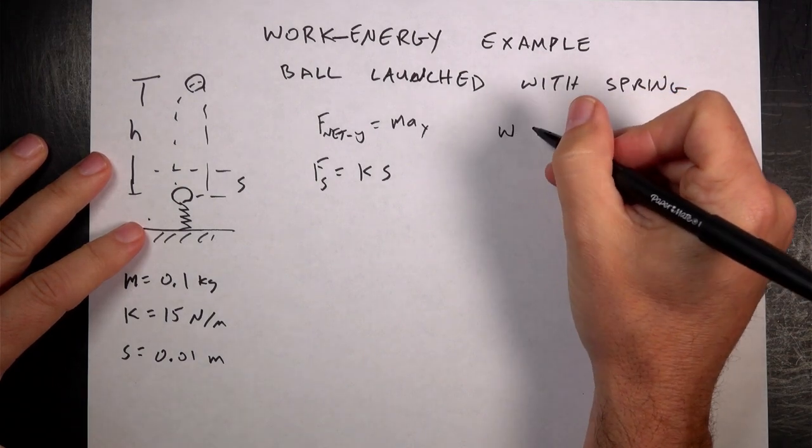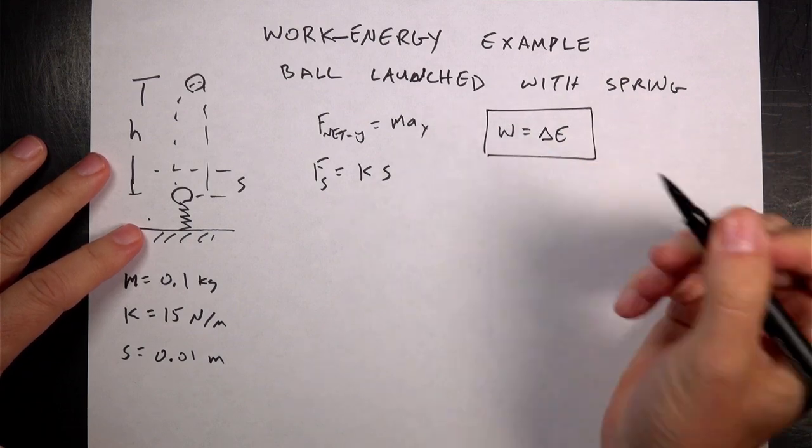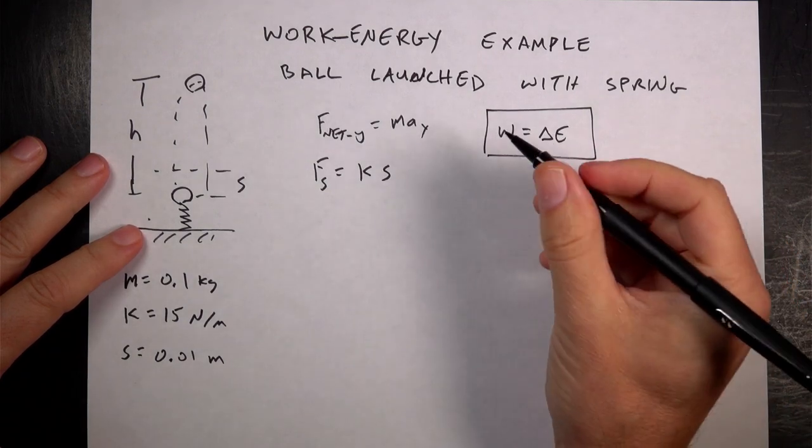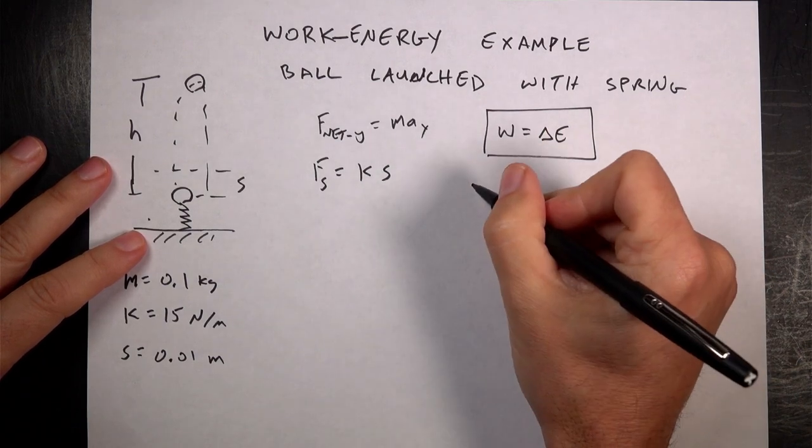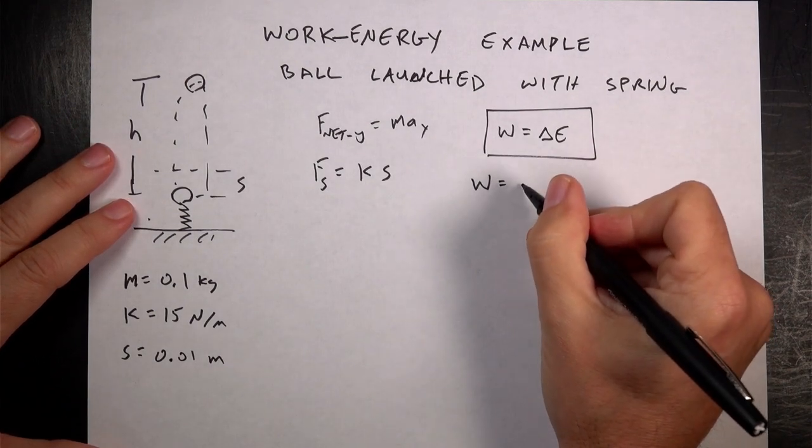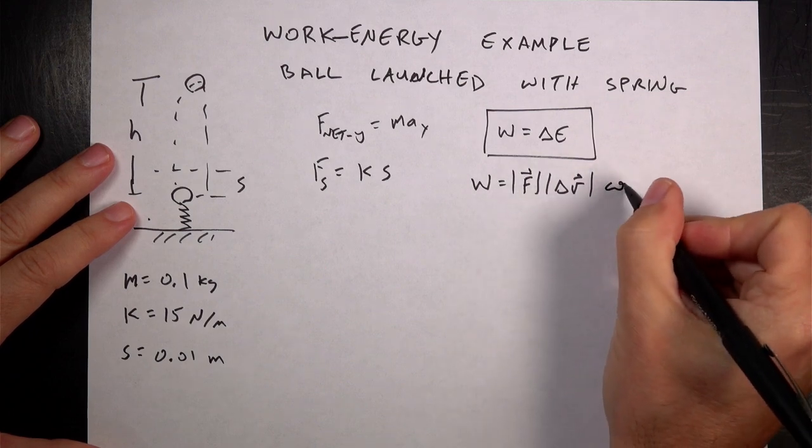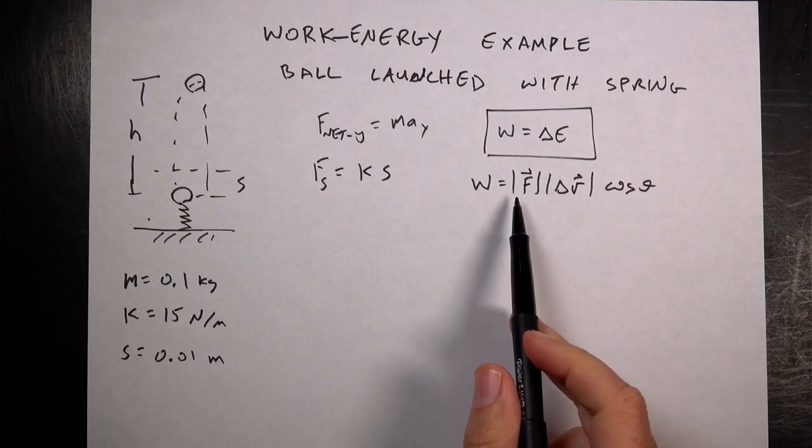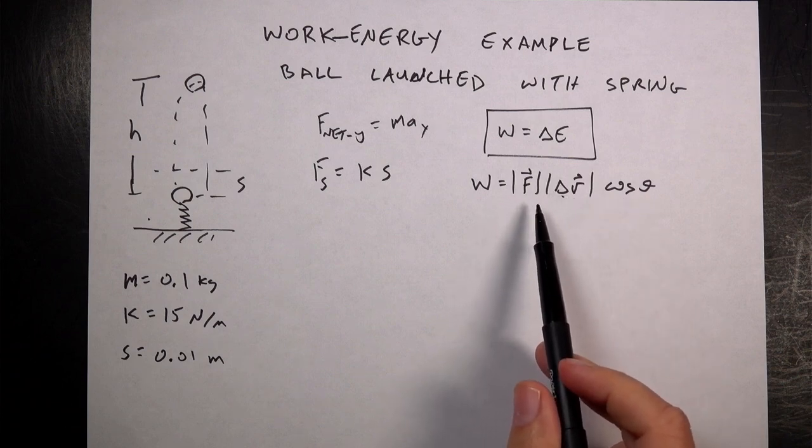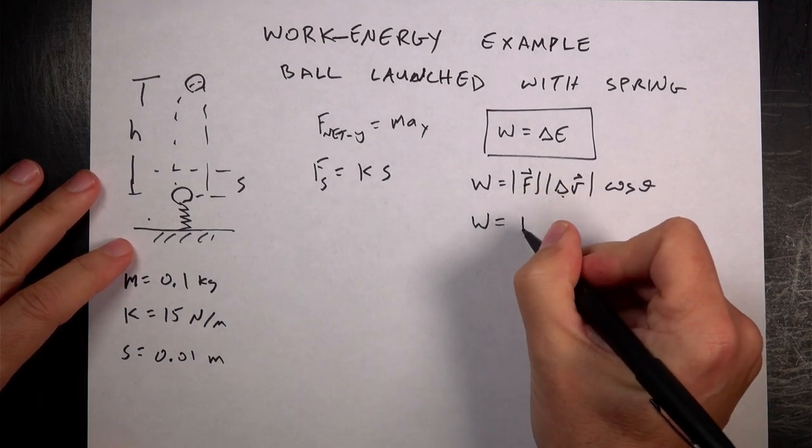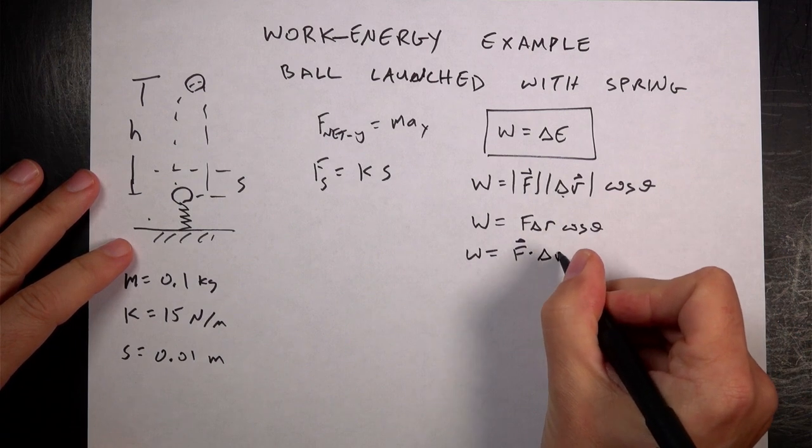So this is the work energy principle. I can write that as work as a change in energy. That's the work energy principle right there. So what is work? This is a way to deal with problems that only depend on position. So we define work, and this is the algebra-based version. Work is some force F magnitude times the displacement delta R times cosine of theta. So the work done by some force F depends on the magnitude of that force, how far the force is applied, and the angle between F and delta R. You could write this as work equals F delta R cosine theta. You could also write this as work as the dot product, F dot delta R. All those are the same.